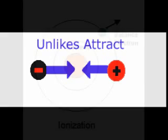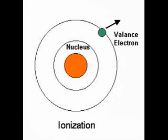Atoms that have more or less electrons than protons are called ions. A positive ion results when an atom has more protons than electrons. A negative ion results when an atom has more electrons than protons. The process of creating an ion is called ionization.